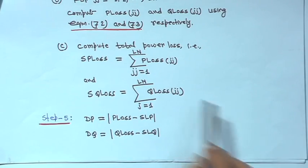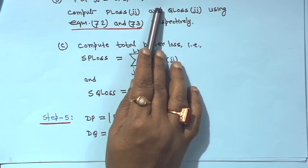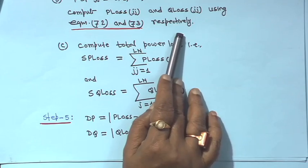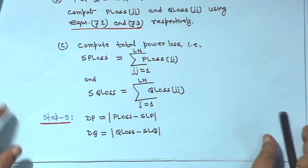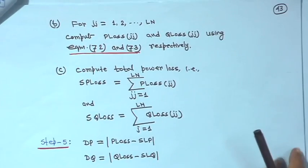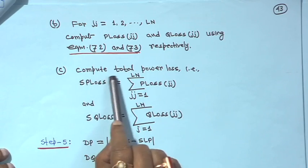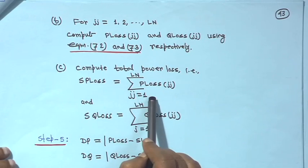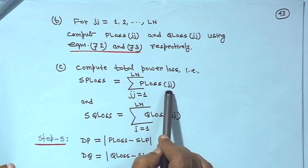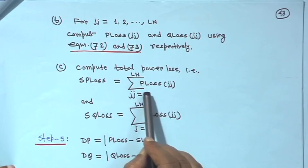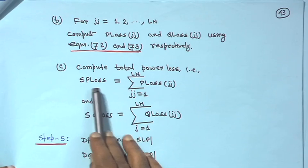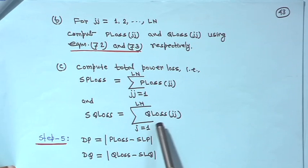Part B: for jj equals 1 to LN, compute P loss jj and Q loss jj using equations 72 and 73 respectively. Part C: compute total power loss by summing all branch losses — S P loss equals sum from jj equals 1 to LN of P loss jj. Similarly, total Q loss S Q loss equals sum from jj equals 1 to LN of Q loss jj.